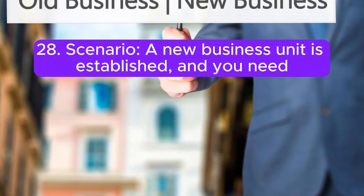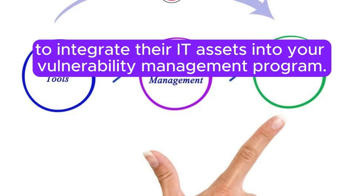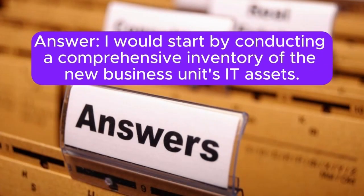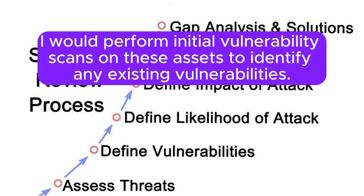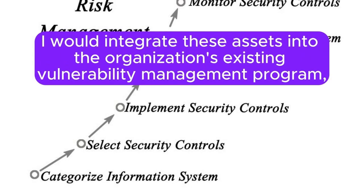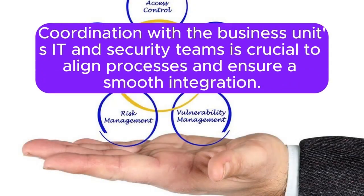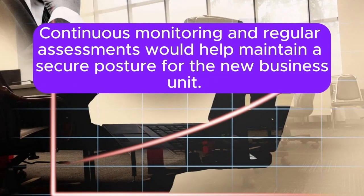Scenario 28: A new business unit is established, and you need to integrate their IT assets into your vulnerability management program. What steps do you take? I would start by conducting a comprehensive inventory of the new business unit's IT assets and perform initial vulnerability scans on these assets to identify any existing vulnerabilities. I would integrate these assets into the organization's existing vulnerability management program, ensuring they follow the same standards and procedures. Coordination with the business unit's IT and security teams is crucial to align processes and ensure a smooth integration. Continuous monitoring and regular assessments would help maintain a secure posture for the new business unit.